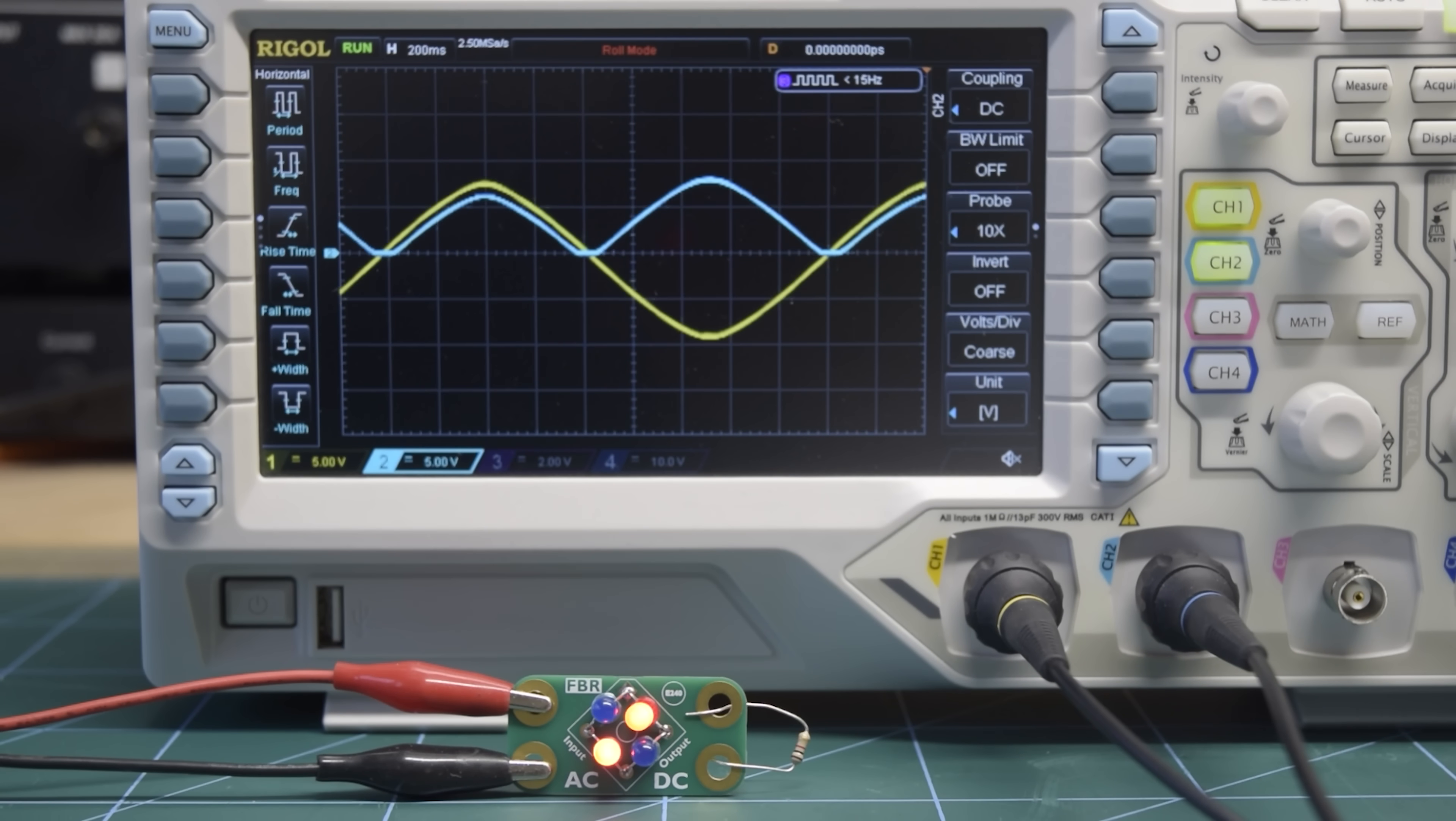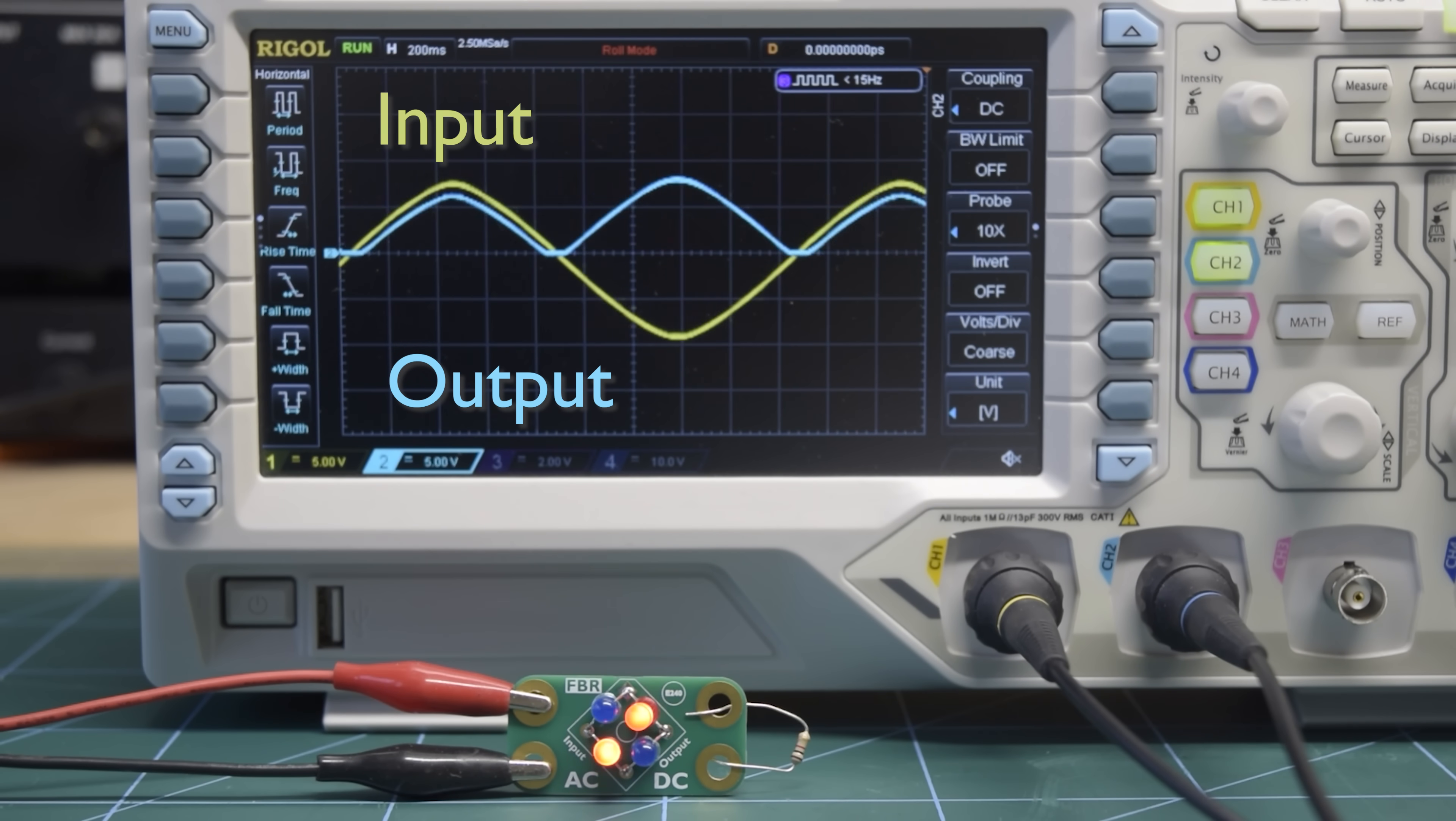Here we can see the rectified output, and it's quite similar to that of the half-wave rectifier, except when the AC input goes negative, our clever arrangement of diodes flips the connection around to make it positive once more.